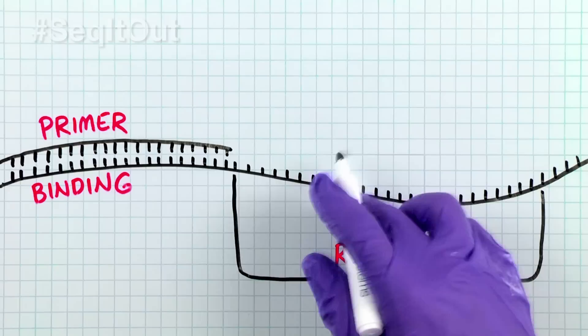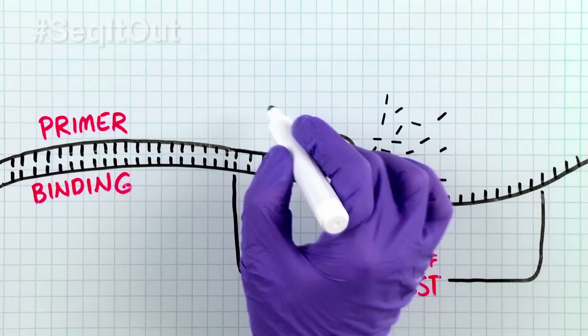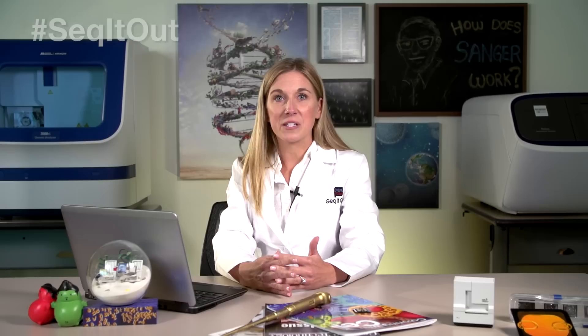So what are the basics of Sanger sequencing? Let's take a look at our lab book. It all starts by having a short primer binding next to the region of interest. In the presence of the four nucleotides, the polymerase will extend the primer by adding on the complementary nucleotide from the template DNA strand.